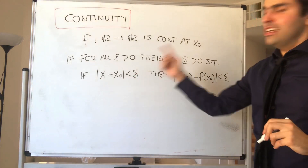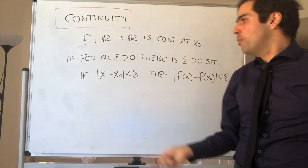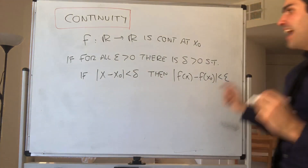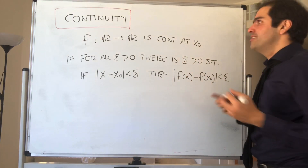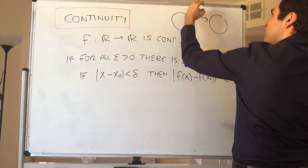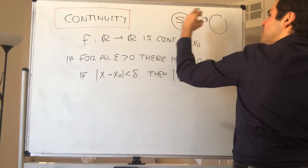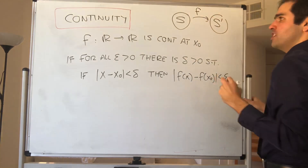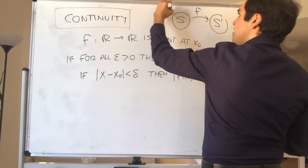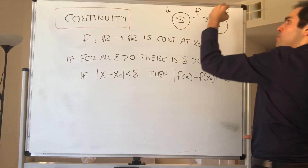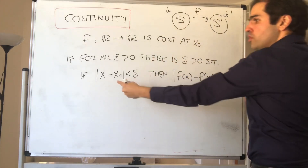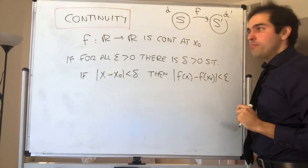And notice this definition doesn't really use anything about ℝ except the fact that we can take distances. And this is why we can easily generalize this to metric spaces, because suppose you have a function f from a metric space S to another metric space S prime. Now each of them is equipped with their own distance, so let's say S is equipped with d and S prime is equipped with d prime. Then all you need to do is replace absolute value with the metric.